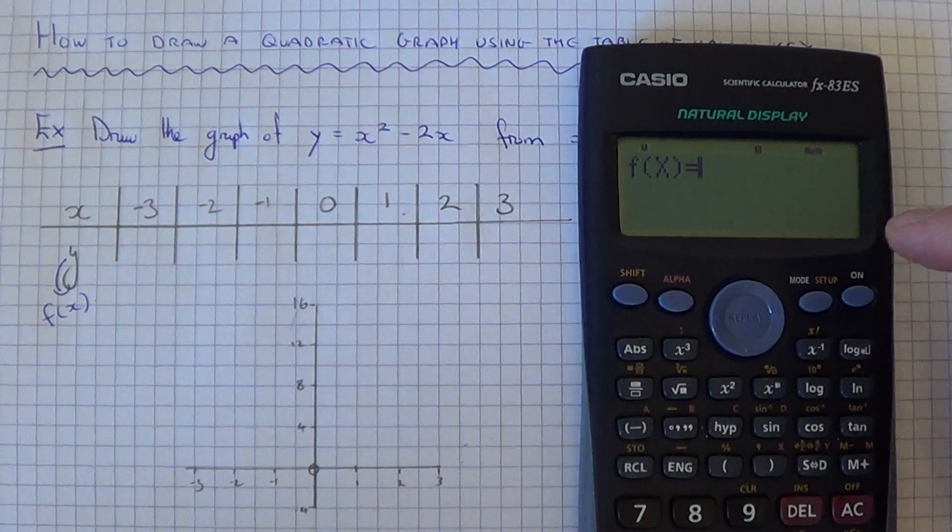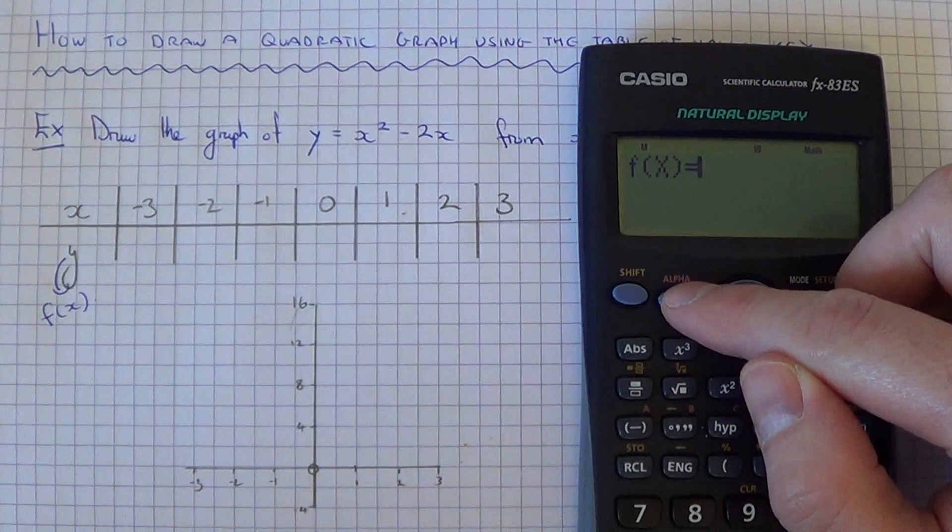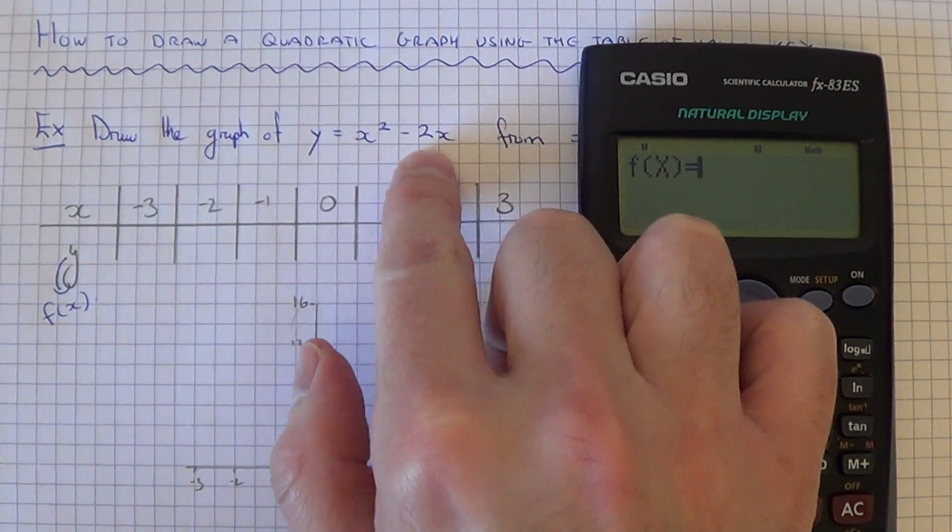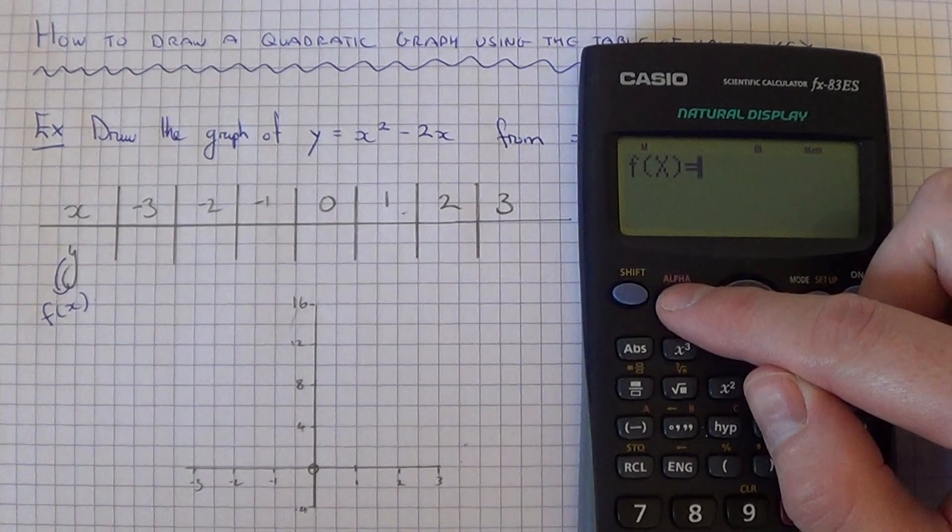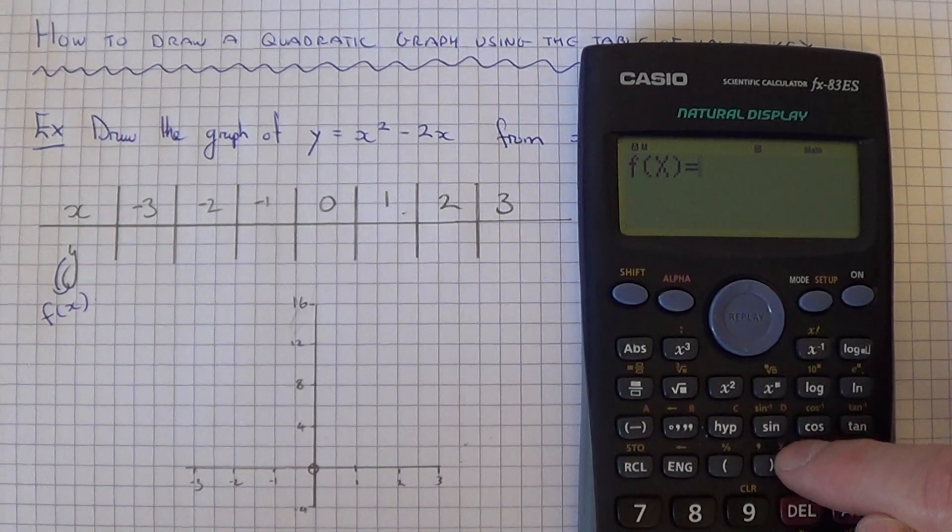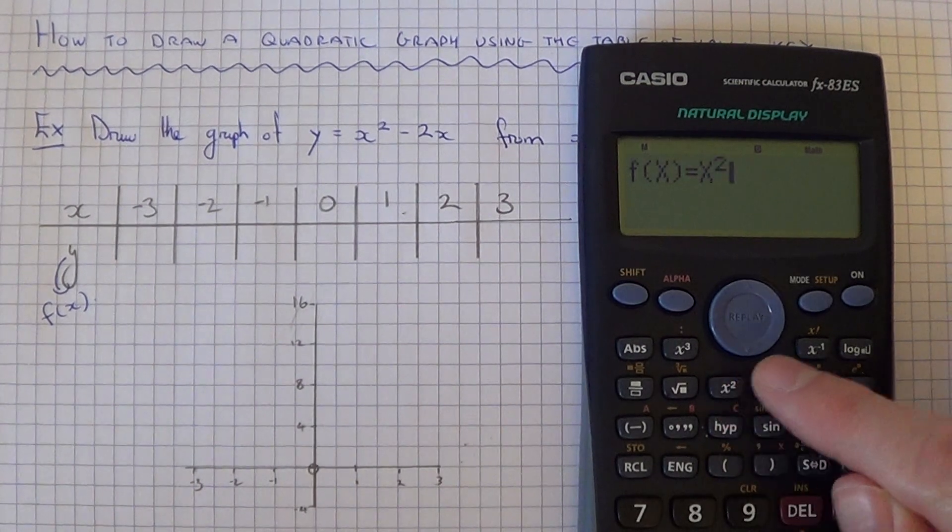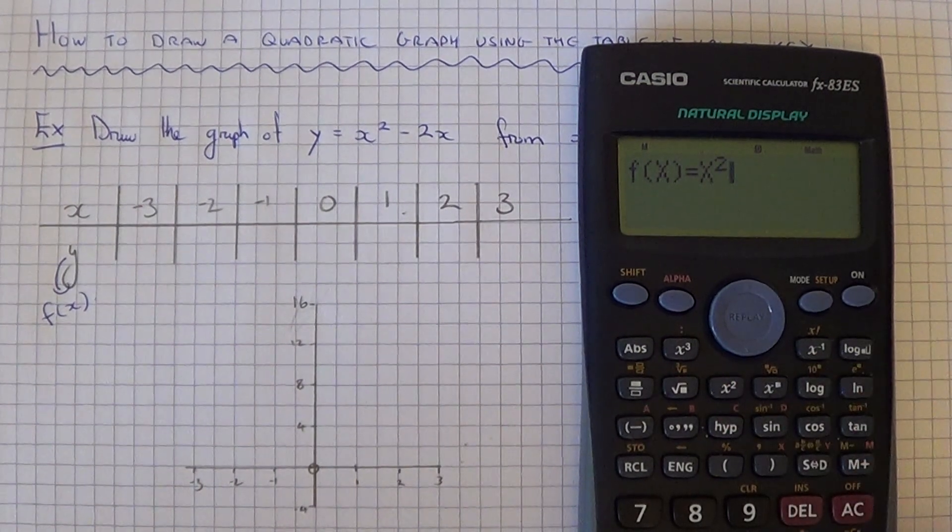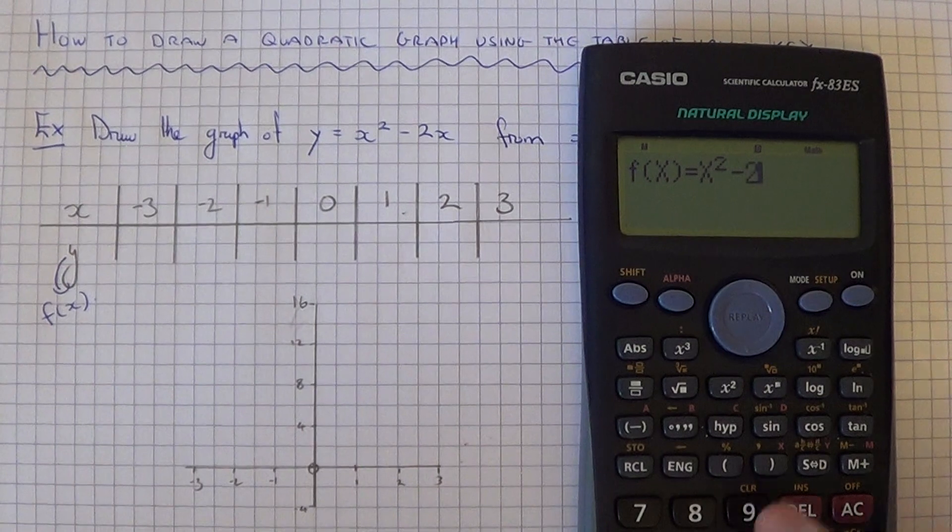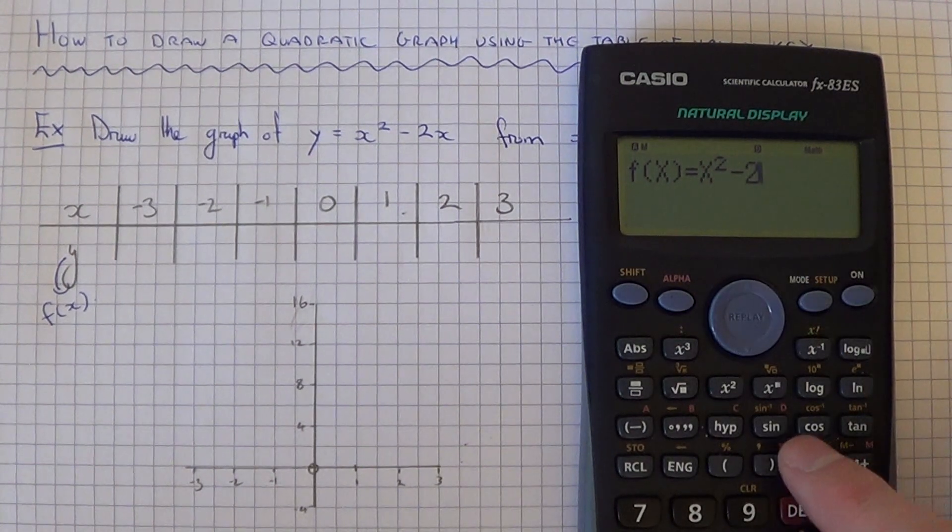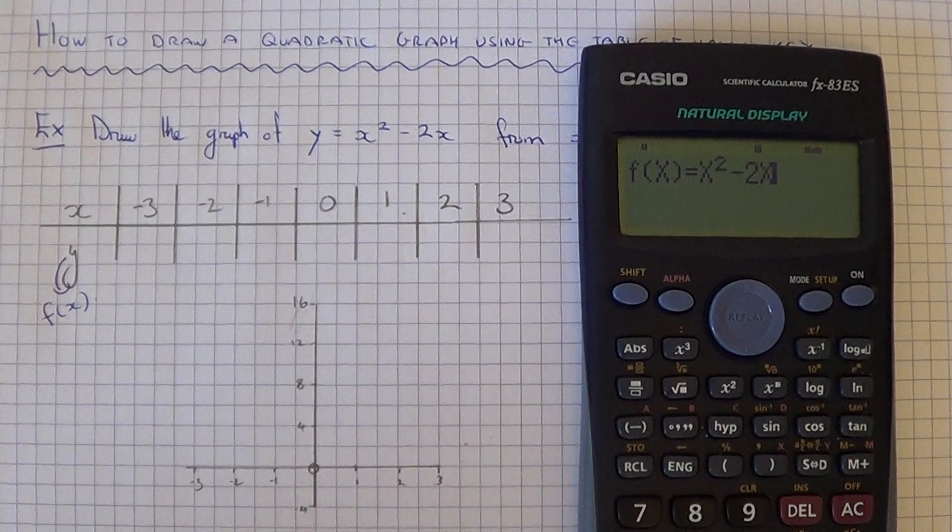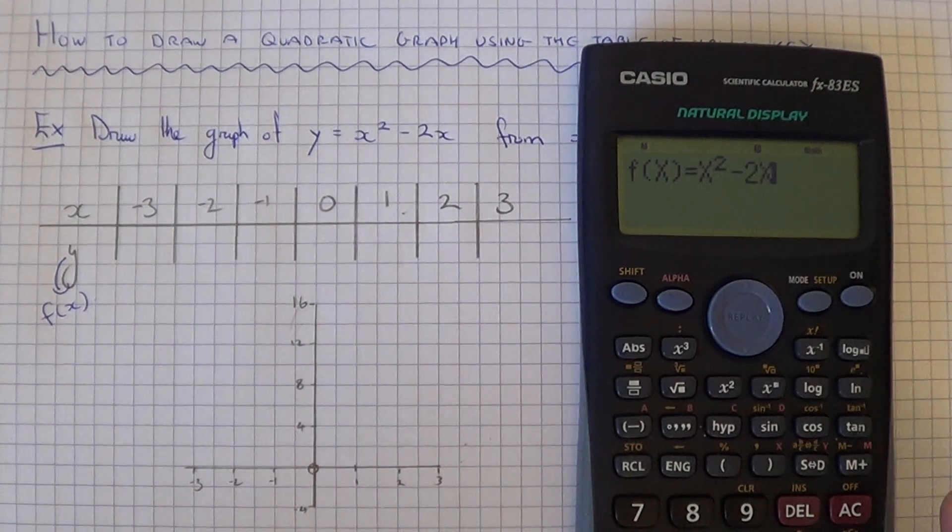We're then going to use the alpha key to type in x squared minus 2x. So if we go alpha and the x is on the right bracket key, then we can do squared and then we've got minus 2 alpha x. So we've typed in our quadratic now. Hit the equals key.